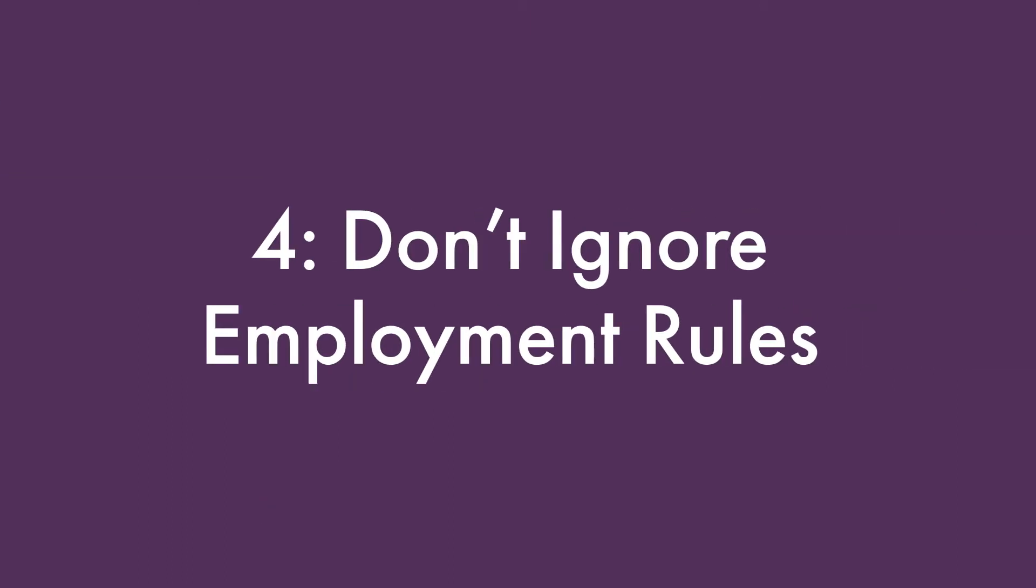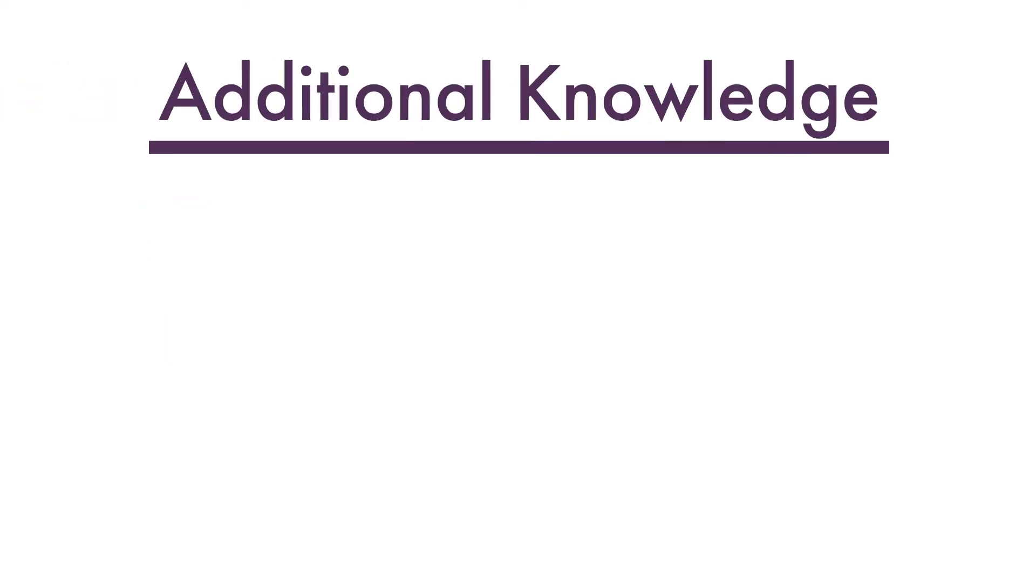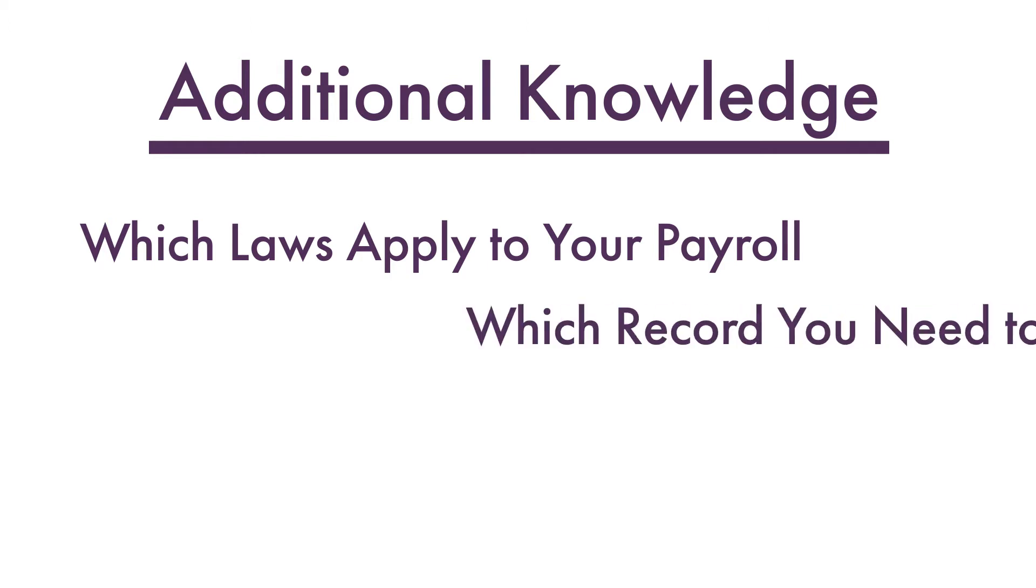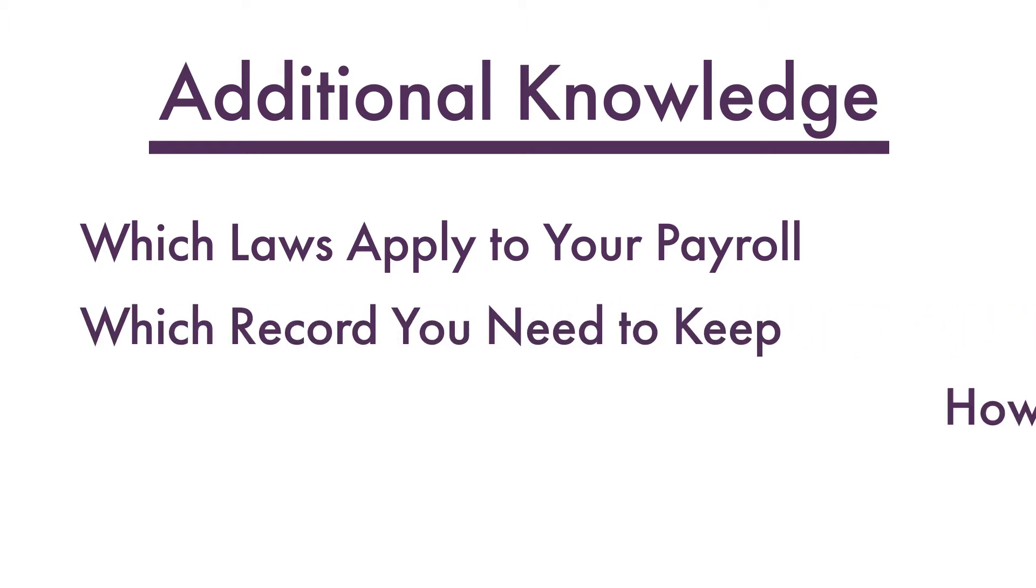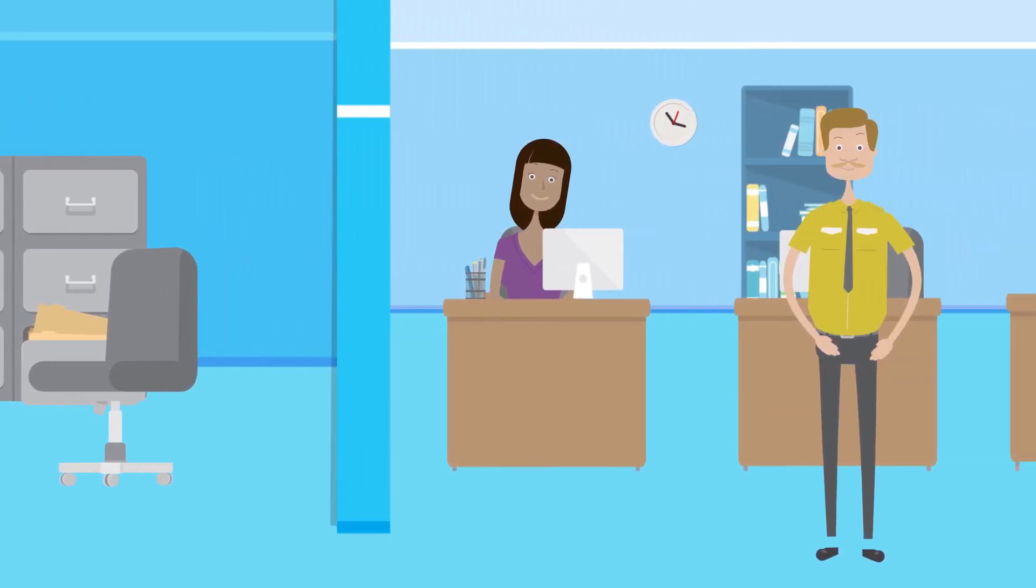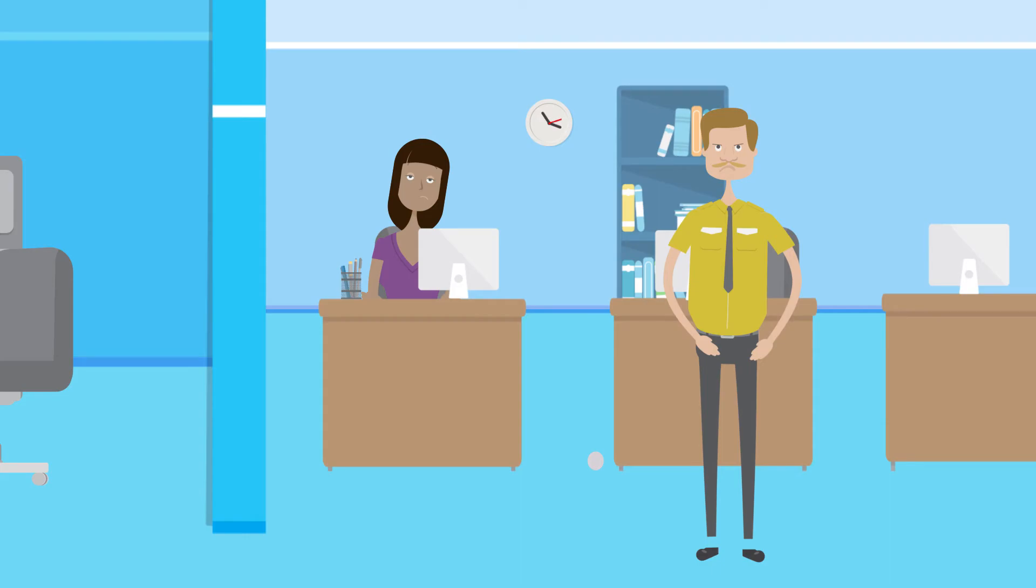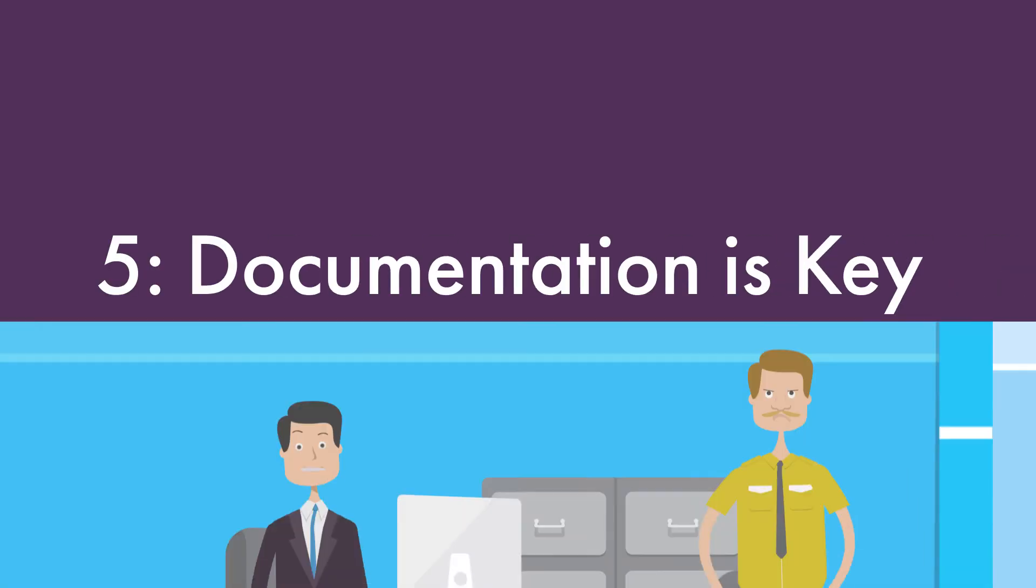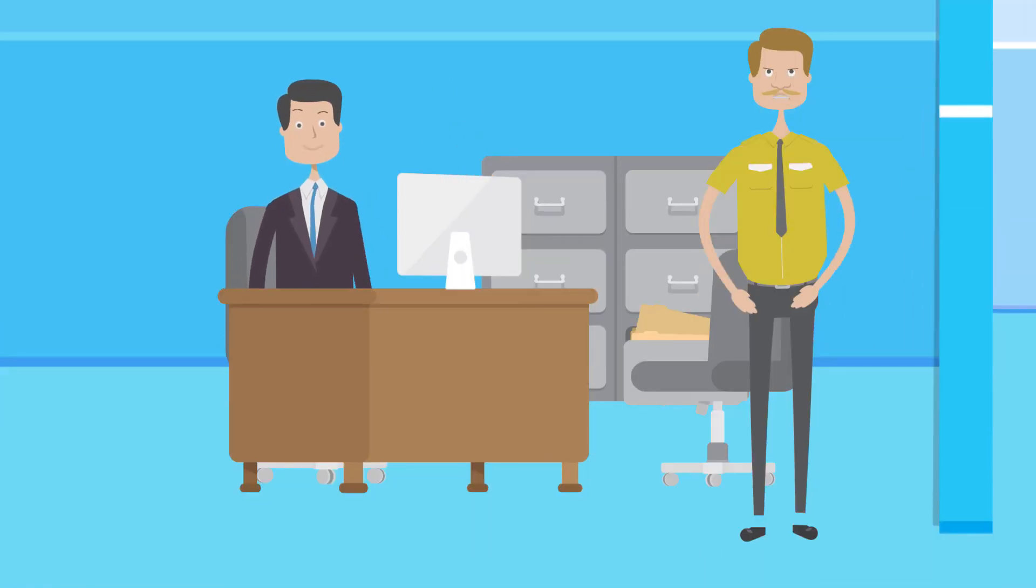You must also comply with a host of laws that define your relationship with your employees. This includes hiring, onboarding, performance, termination, and training. You also need to know which laws apply to your payroll, which records you're required to keep, how to avoid discrimination and wage and hour violations. With independent contractors, you can even be liable for employee behavior. To avoid these problems, document everything, including any verbal discussions.